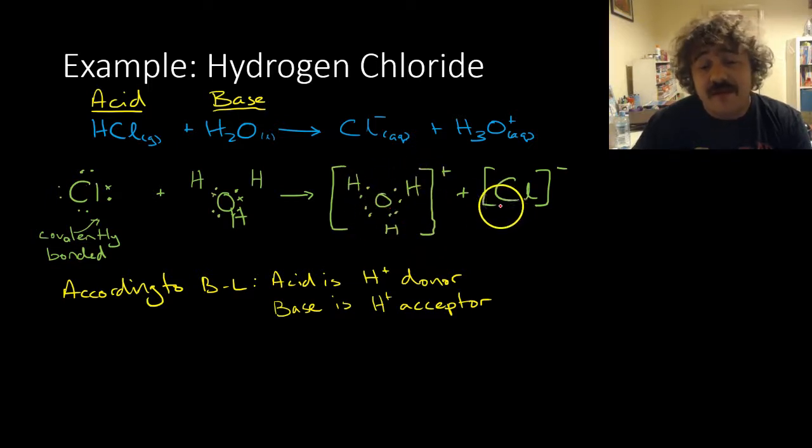We have the hydronium ion plus the chloride ion. This was our acid, and this is our base. It's interesting to think of water as an acid or base. According to Bronsted-Lowry theory, the acid is a proton donor, and the base is a proton acceptor.